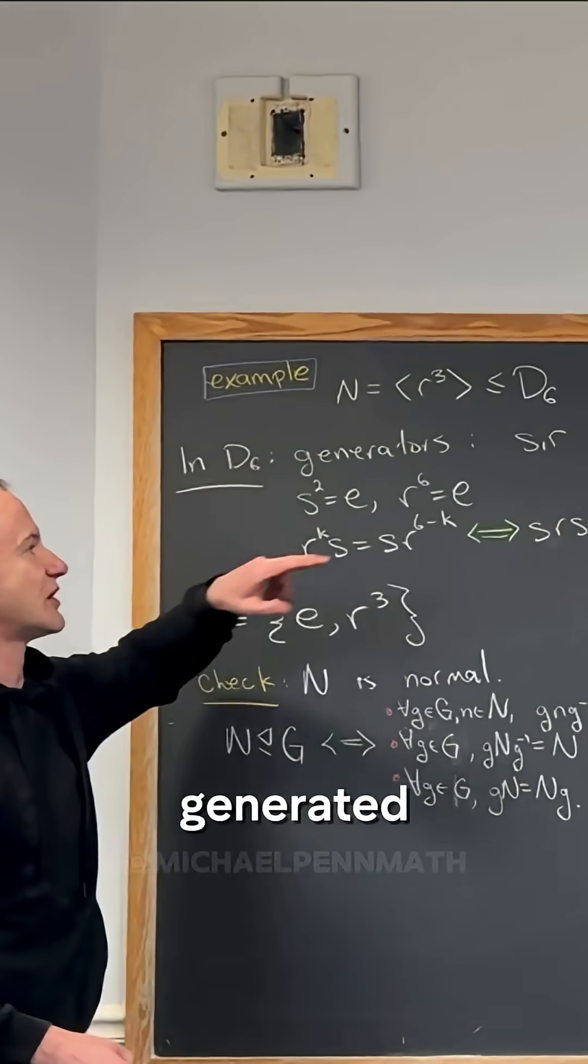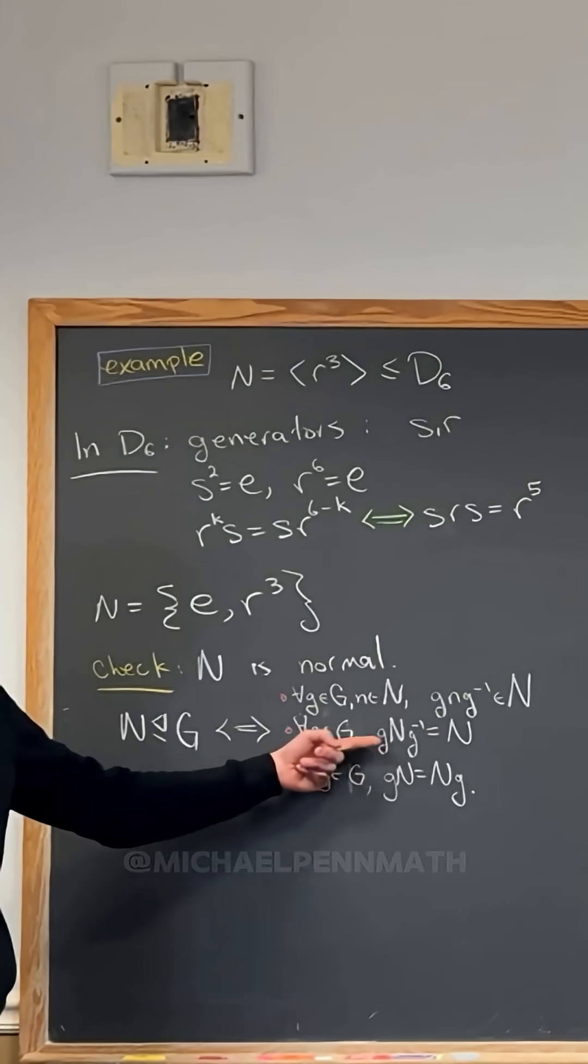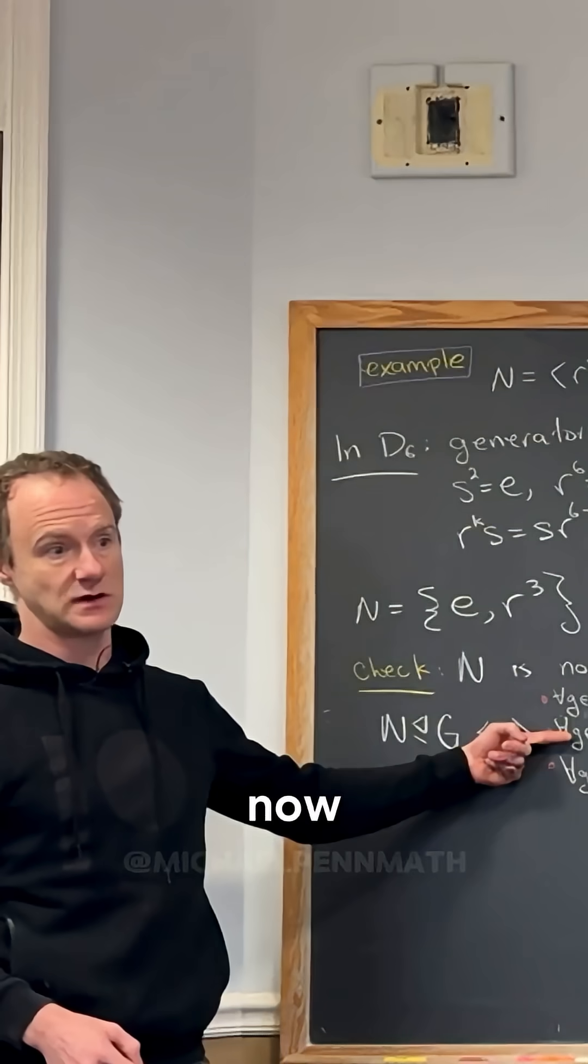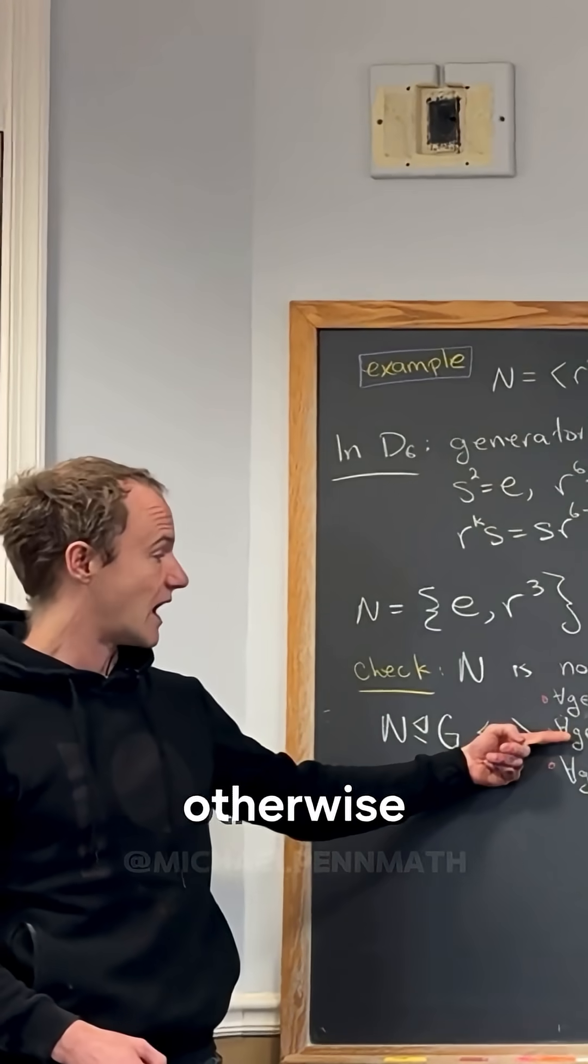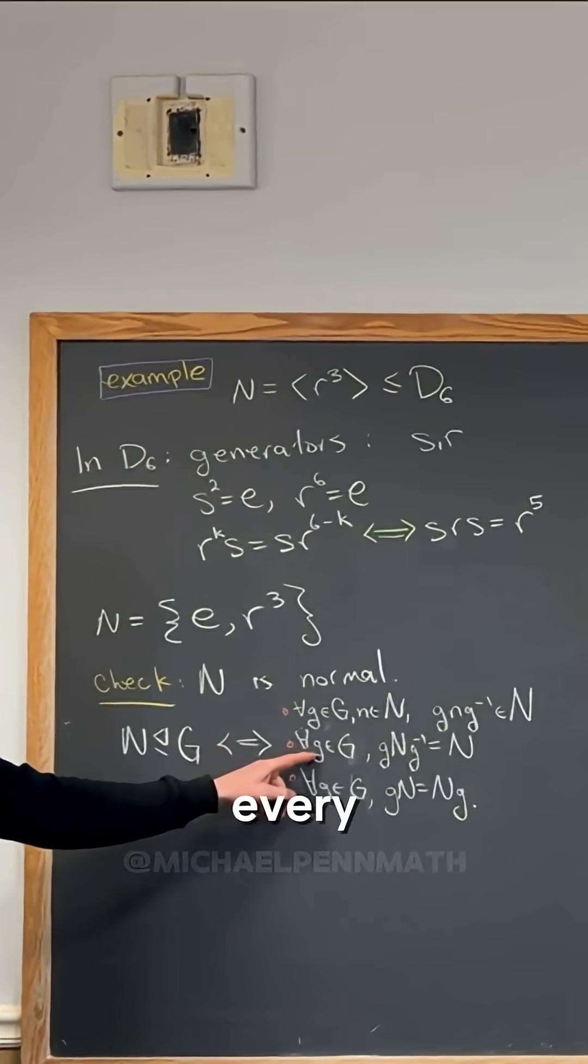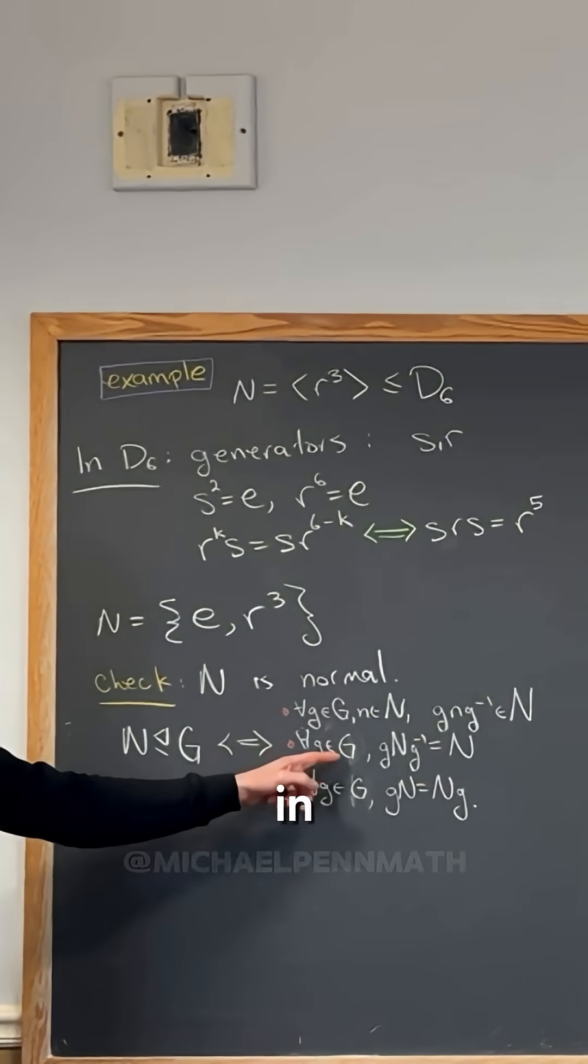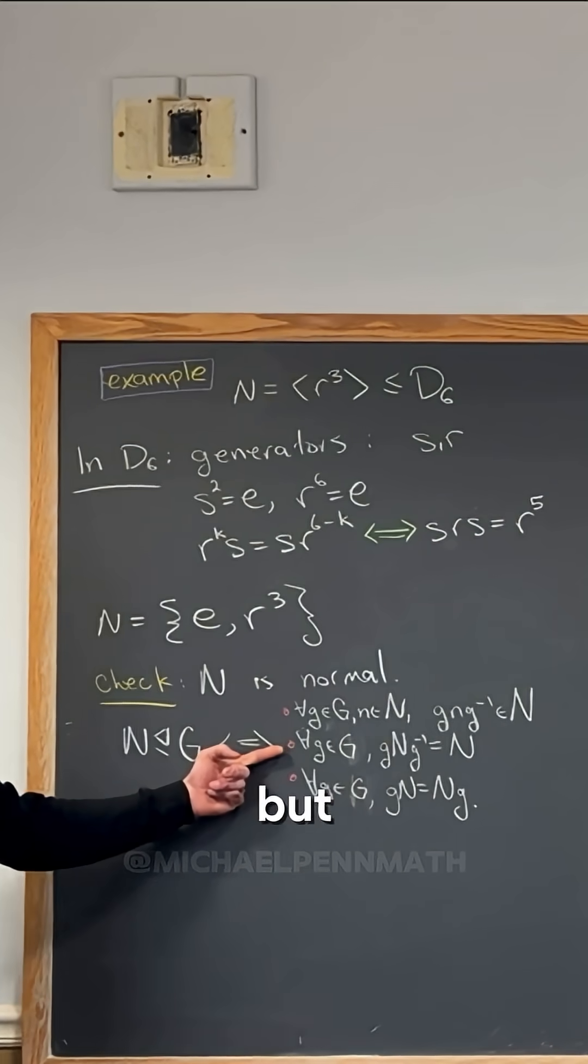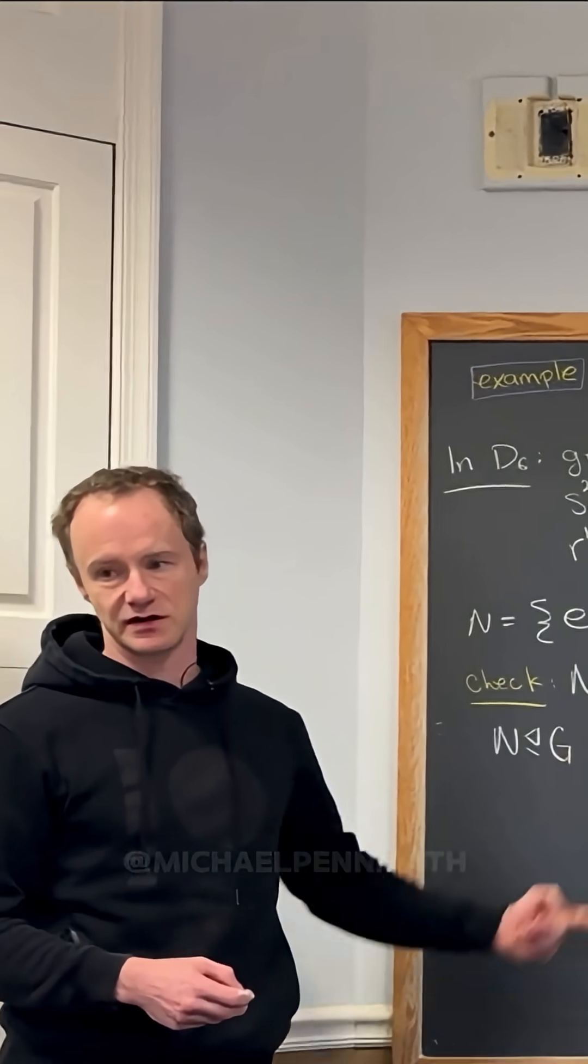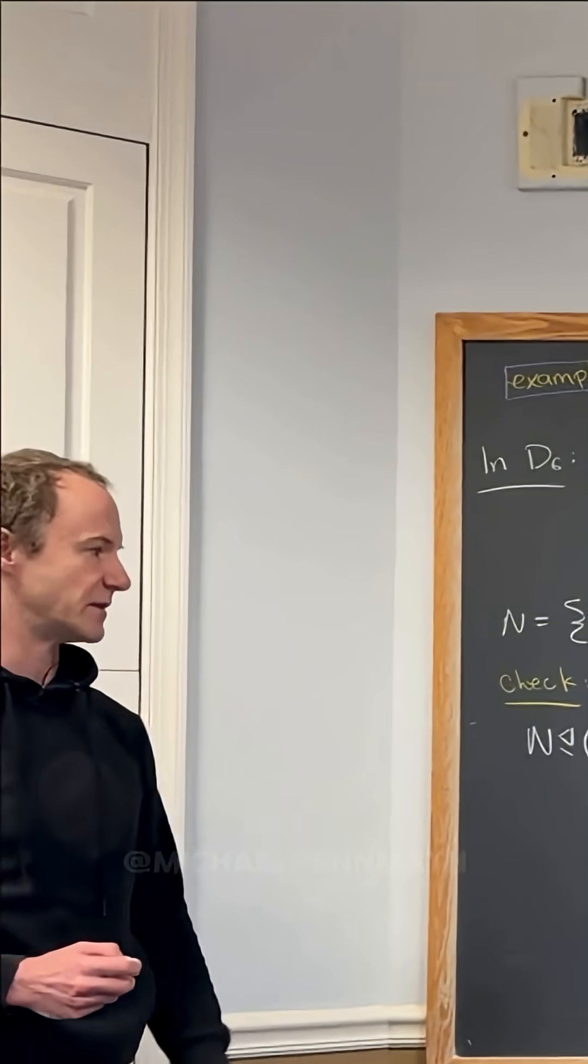And now here's the pro tip. Since D6 is generated by S and R, we only have to do this for the generators. Now that helps you a lot, right? Because otherwise you would have to do this for every element g in G. But there are 12 elements in the group, right? That's kind of a lot of work. But you only have to do it for the generators because if you do it for the generators, it works for all the rest of them.